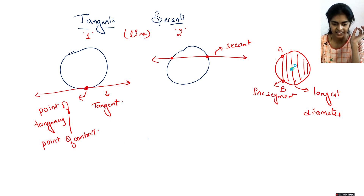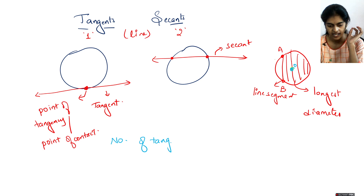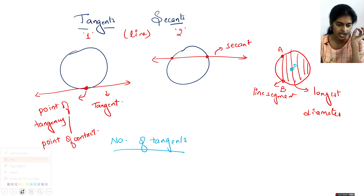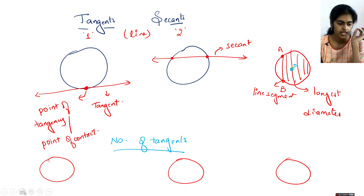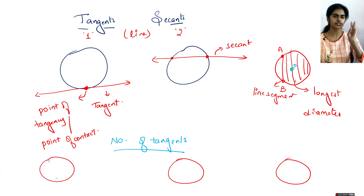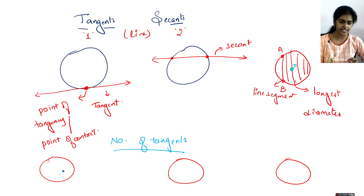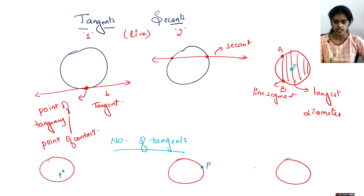The next important concept is the number of tangents. Suppose if you have a circle, I have three types of points: one inside the circle, one on the circle, and one outside the circle.